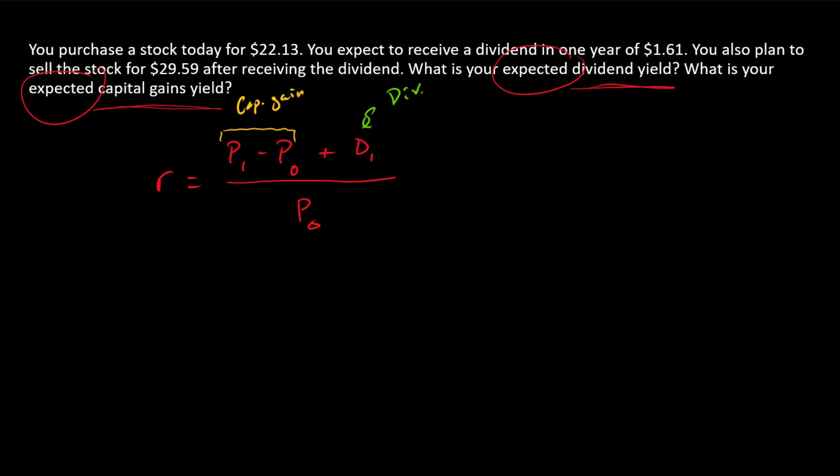So let's start with the capital gains yield. When I say yield, that just means I want to express it in percentage of the purchase price. And so the capital gains yield is just going to be this part over here. So the change in price, so the capital gains in dollars scaled by the initial price.